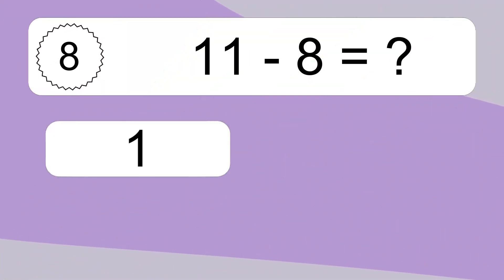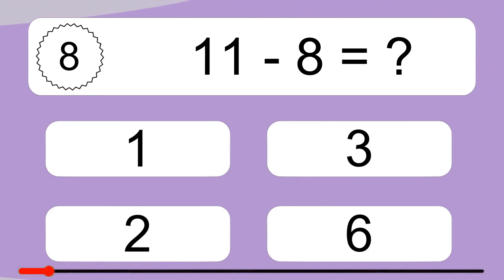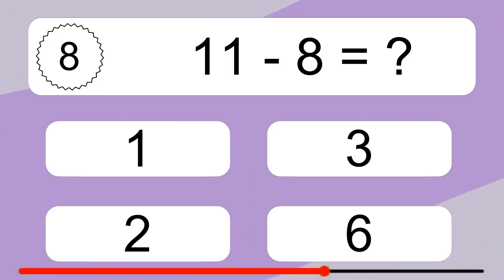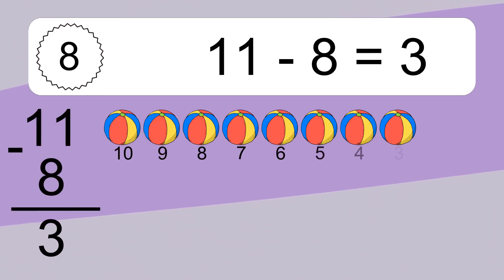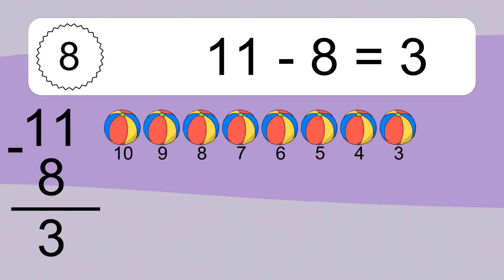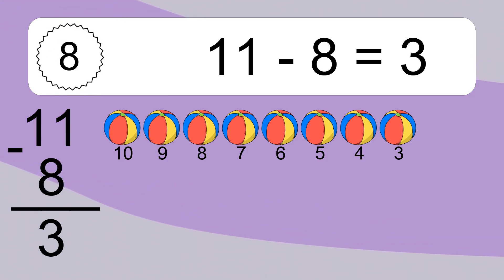11 minus 8 equals what? 11 minus 8 equals 3. Let's count it: 10, 9, 8, 7, 6, 5, 4, 3.